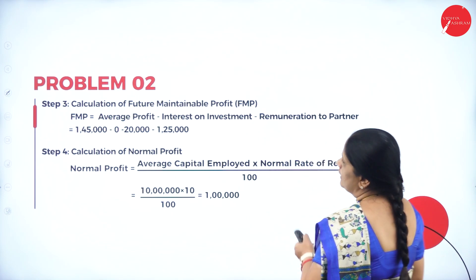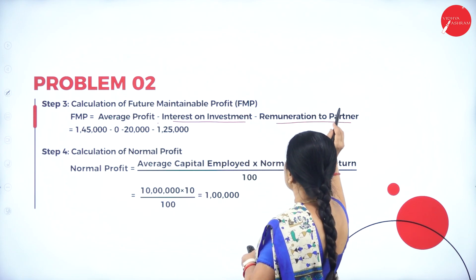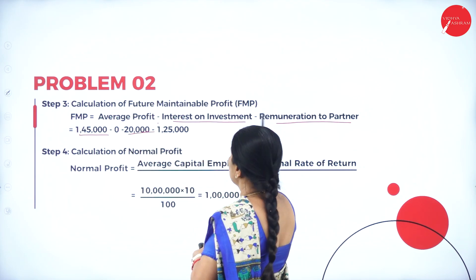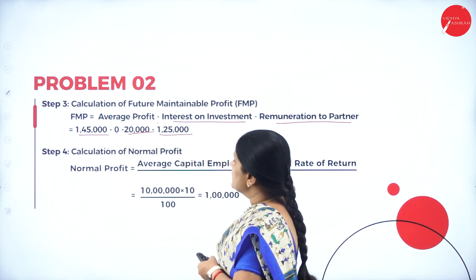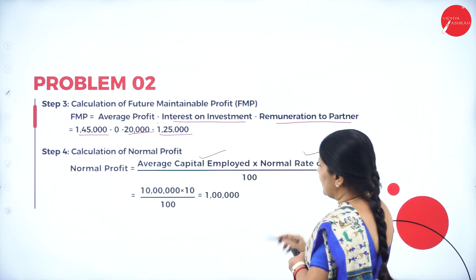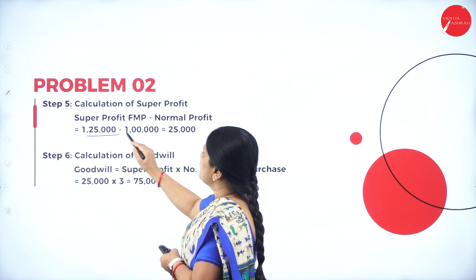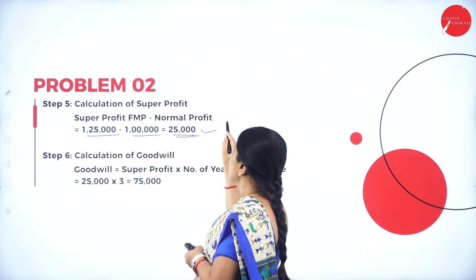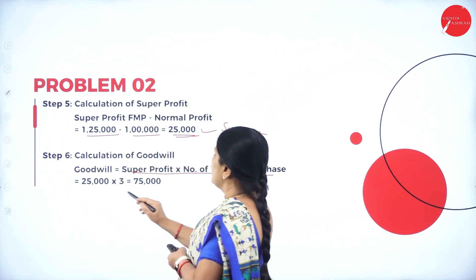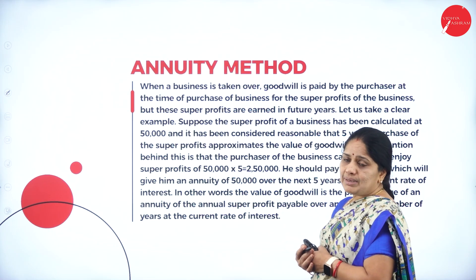Calculation of FMP: average profit minus remuneration to partners. Average profit is 1 lakh 45,000 minus remuneration of 20,000 gives 1 lakh 25,000. Normal profit is average capital employed into NRR by 100, which comes to 1 lakh. Super profit is 1 lakh 25,000 minus 1 lakh equals 25,000. Goodwill is super profit into number of years of purchase: 25,000 into 3 equals 75,000.